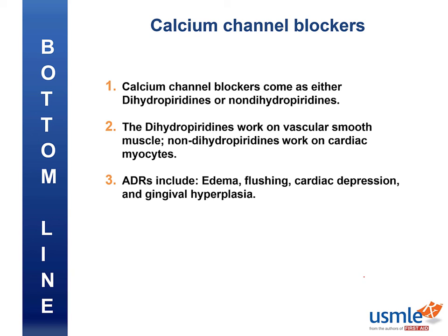In this video, we learned that calcium channel blockers come in two different flavors: the dihydropyridines and non-dihydropyridines. The dipines tend to work on vascular smooth muscle, while non-dipines work more on cardiac myocytes. Some of the associated adverse drug reactions include edema, flushing, cardiac depression, and the rare gingival hyperplasia. Thanks for watching, and be sure to click thumbs up if you enjoyed this video.